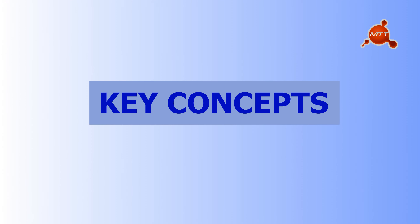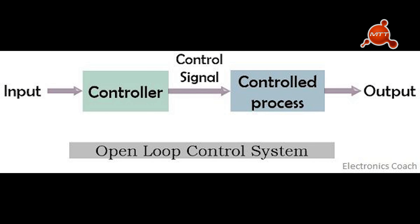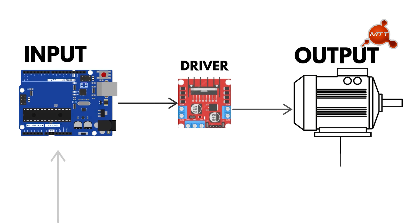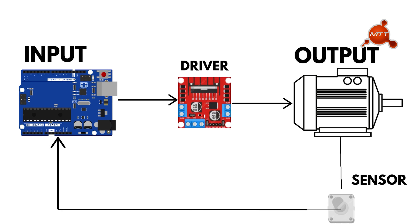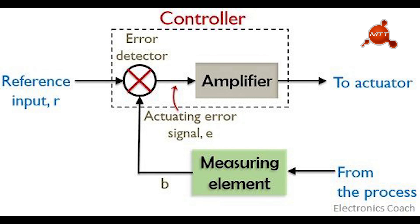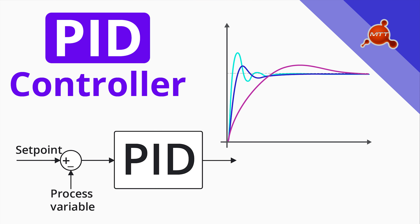Let's quickly review the key concepts covered in the video. Open loop system: a system that operates without feedback, where the input is applied without considering the output. Feedback: information from the output that is sent back to the input to help maintain the desired output. Closed loop system: a system that uses feedback to continuously adjust its input and achieve the desired output. Controllers: devices or algorithms that decide by how much the input needs to be changed based on feedback. PID controller: a powerful control mechanism combining proportional, integral, and derivative elements to maintain stability and accuracy in dynamic systems.